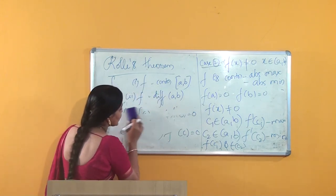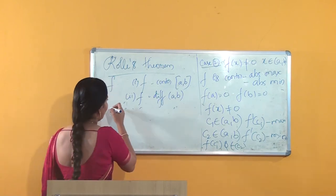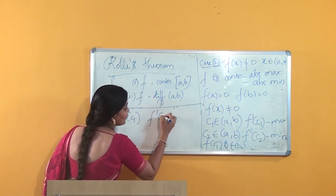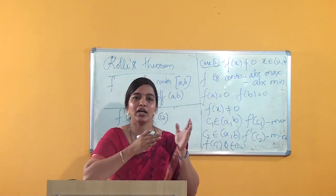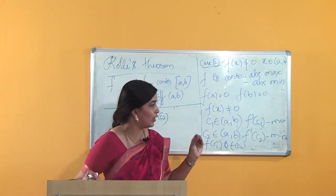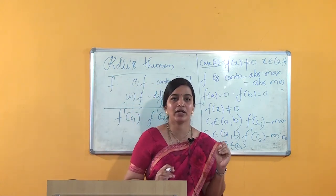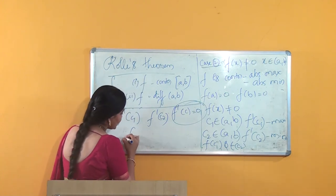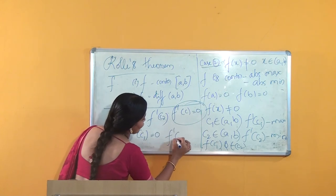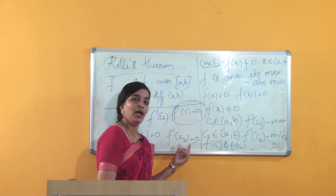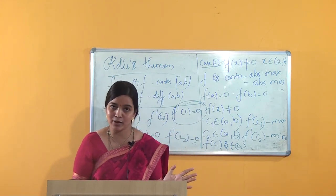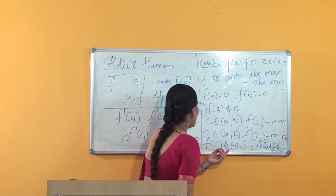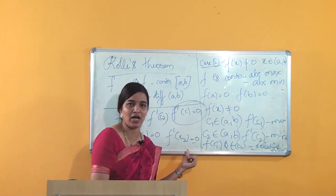We can observe that f(c1) and f(c2) also have a relative extremum value. Since f is differentiable, f'(c1) and f'(c2) both exist. Using the theorem discussed in the previous class — if a function has a relative extremum value and is differentiable — we can say that f'(c1) = 0 and f'(c2) = 0.